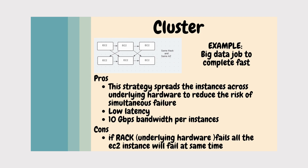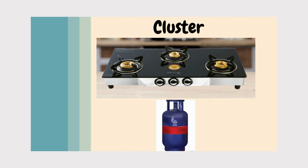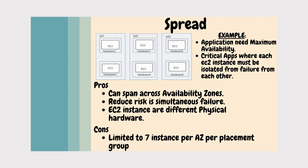With Cluster, under one particular hardware, seven or eight EC2 instances share that hardware. The problem with this strategy is that if this particular hardware has some issue, all seven or eight EC2 instances may fail. If the underlying rack hardware fails, all EC2 instances will fail at the same time. This is not recommended for high availability, but it's suitable for running big data jobs that need to run fast. The real-time example: you have a gas stove with a gas cylinder — if the cylinder runs out, all your cooking stops.